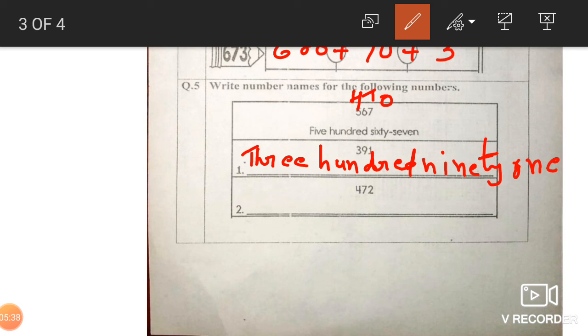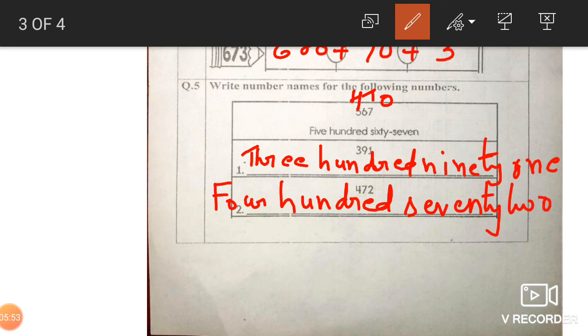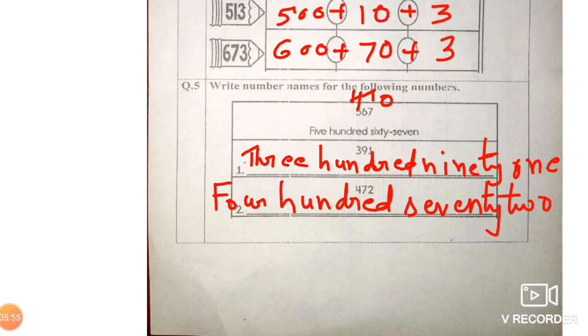Next. 472. 100 hai? 4. So we'll write 4. 472. Isn't it? That's all children. Have a nice day.